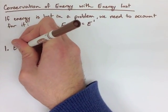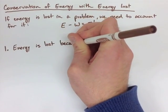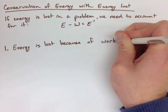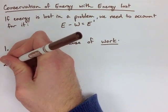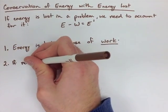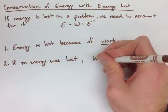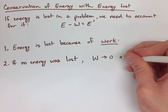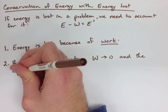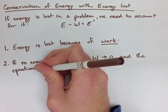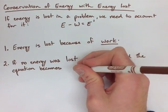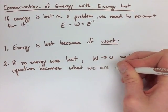There are three kinds of situations we have to look at for this. One, energy is lost because of work. Two, if no energy is lost, what that means is that work is equal to zero. So then we can use our normal conservation of energy equation where we have E equals E prime. Finally, when we're looking at this, energy is usually lost due to a force such as friction.